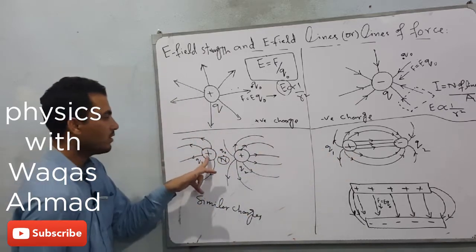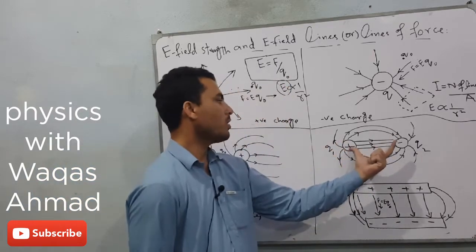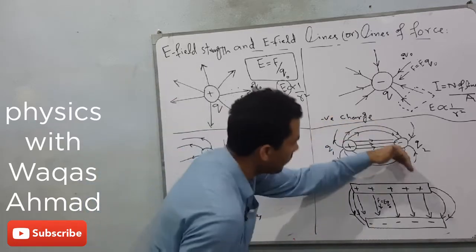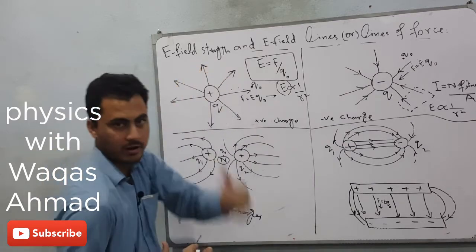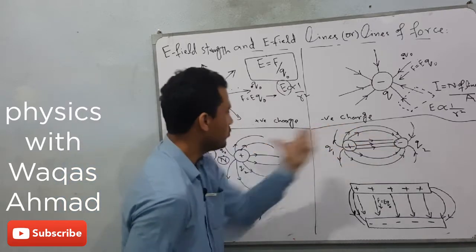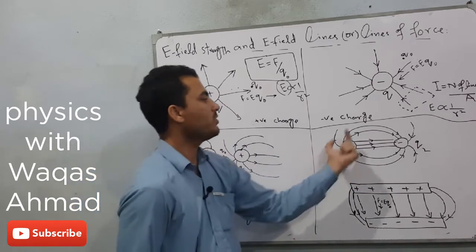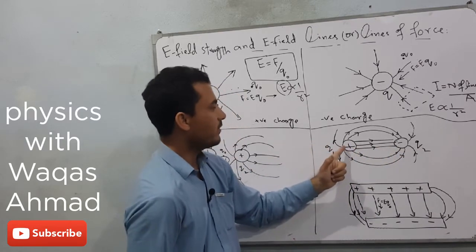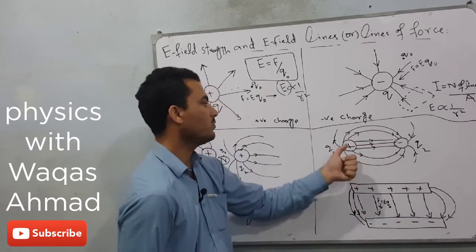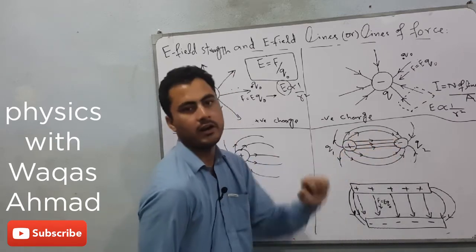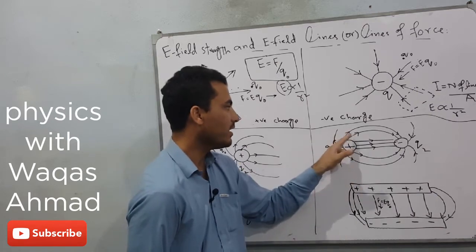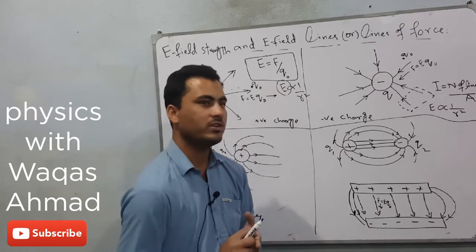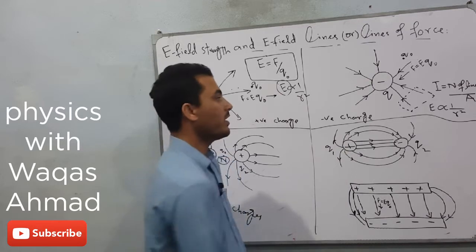When two charges of opposite nature are brought towards each other, the field lines acquire a curved shape, compared to the straight radial field of an isolated charge. Radial field only exists in the case of an isolated charge, but curved fields exist for two charges, whether positive-positive or positive-negative. The curvature is due to the attraction between opposite charges. Electric field lines go outward from a positive charge and inward towards a negative charge, starting from positive and terminating at negative. Electric field lines can never cross each other because the electric field is a vector quantity — if two lines crossed, there would be two directions at one point, which is physically impossible.